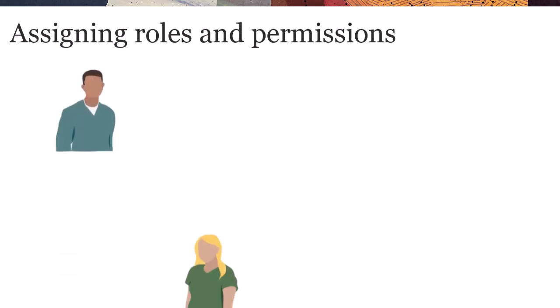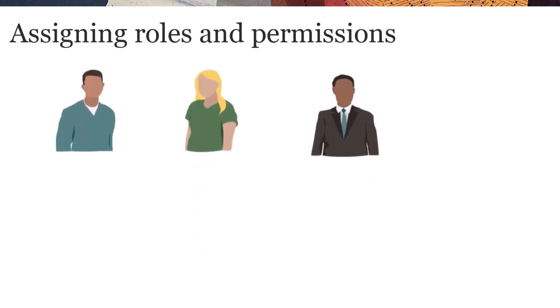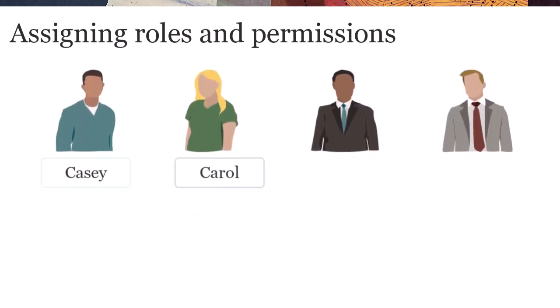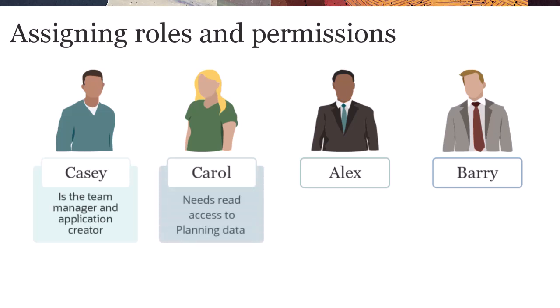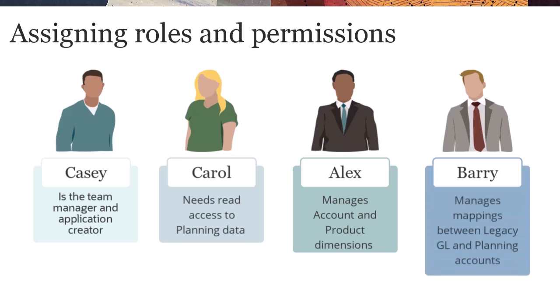Let's look at a scenario where you assign roles and permissions for a team to manage planning data for the enterprise. The team consists of the following people: Casey, the team manager and application creator; Carol, who needs read-only access to planning data; Alex, who manages core planning dimensions such as accounts and products; and Barry, who manages mappings from a source general ledger application to the planning application.